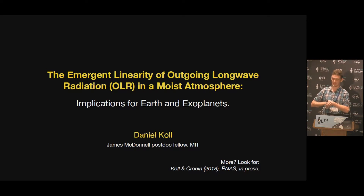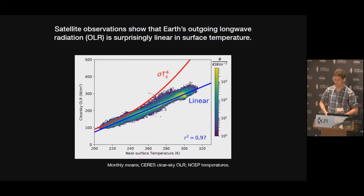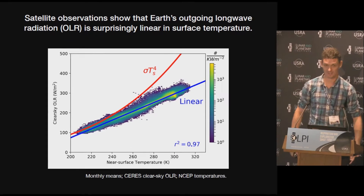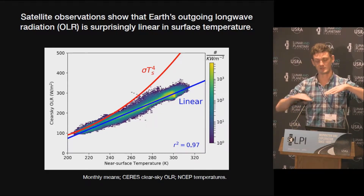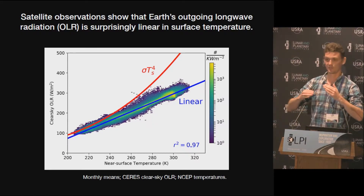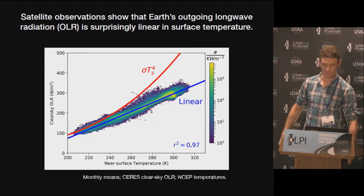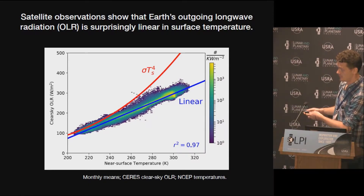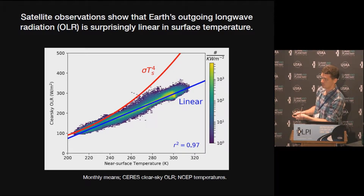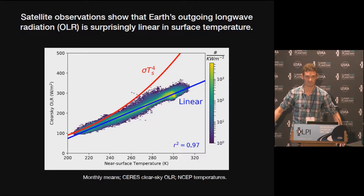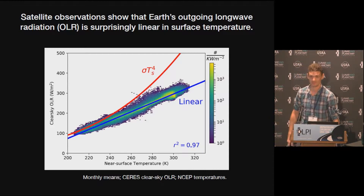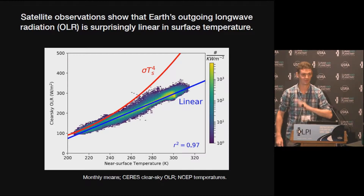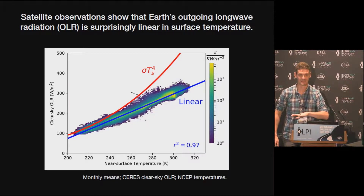The question is, what does Earth actually do? I took data sets of Earth's OLR in cloud-free regions from a satellite, and a data set of near-surface temperature. I chop the globe up into latitude, longitude, and time bins, and make a huge 2D histogram. Almost all the observations are within this yellow smear. And the first thing is: if you think Earth looks like a black body, you would actually be flat-out wrong. That's the main takeaway message of this talk.